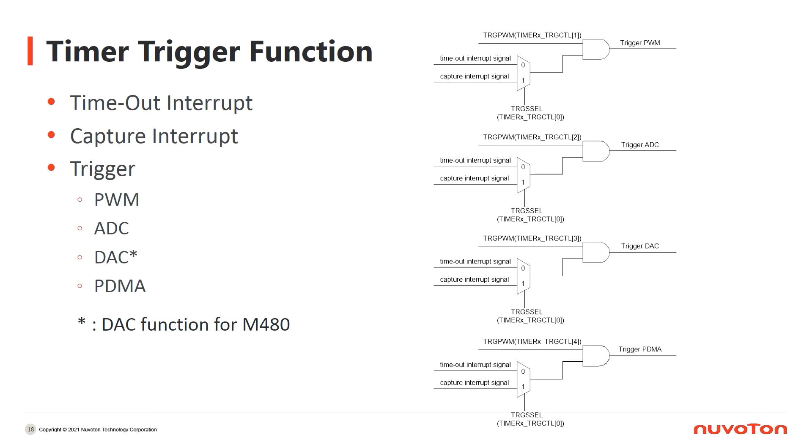Timer interrupt could be triggered by timeout or event capture. You may implement your own interrupt handling functions by your requirements. Besides, for the M031 and M032 series, timer interrupt can be used to internally trigger other peripherals, for example, PWM, ADC, and PDMA. For M480 series, the interrupt can even internally trigger the DAC function.